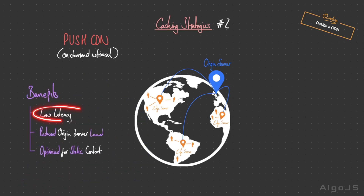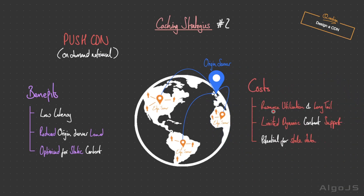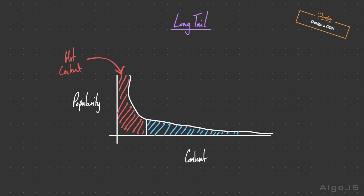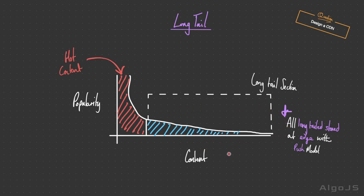Push CDNs offer many benefits: low latency with faster response times since content is already available at the edge, reduced load on the origin server since less reliance on it for handling user requests, and optimization for static or less frequently changed content where preloading is feasible and effective. However, the first major cost to consider is resource utilization, especially regarding long tail data — the vast amount of less popular or niche content that collectively makes up a significant portion of data — which will all be stored on edge servers regardless of popularity.